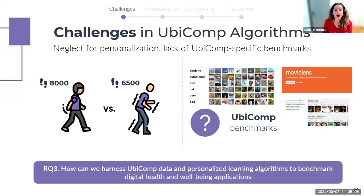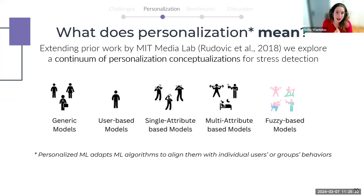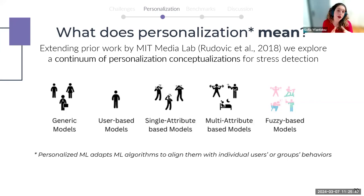These benchmarks truly facilitate researchers in developing and comparing state-of-the-art models, but this is not the case in ubicomp. Our third question is: how can we harness ubicomp data and personalized learning to benchmark digital health and well-being applications and align them with what humans need, value, and expect in the real world? Personalized machine learning adapts algorithms to align them with individual users' or groups' behaviors.